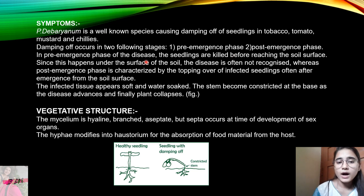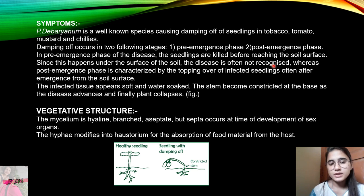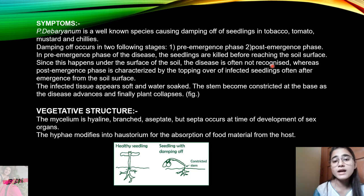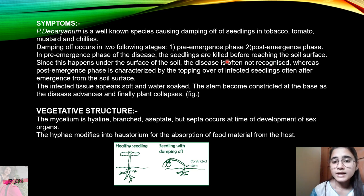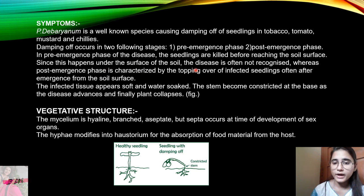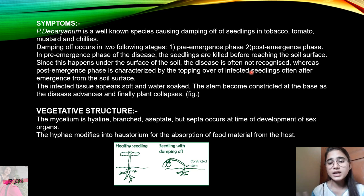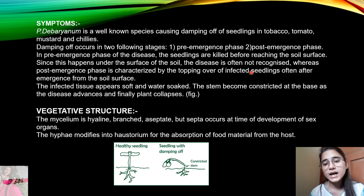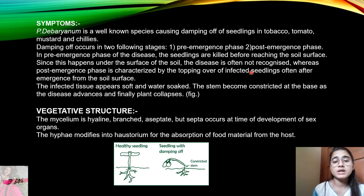In the pre-emergence phase of the disease, the seedlings are killed before reaching the soil surface. Since this happens under the surface of the soil, the disease is not easily recognized. The fungus kills the seedlings at or below the soil surface, so we don't recognize it in this phase.